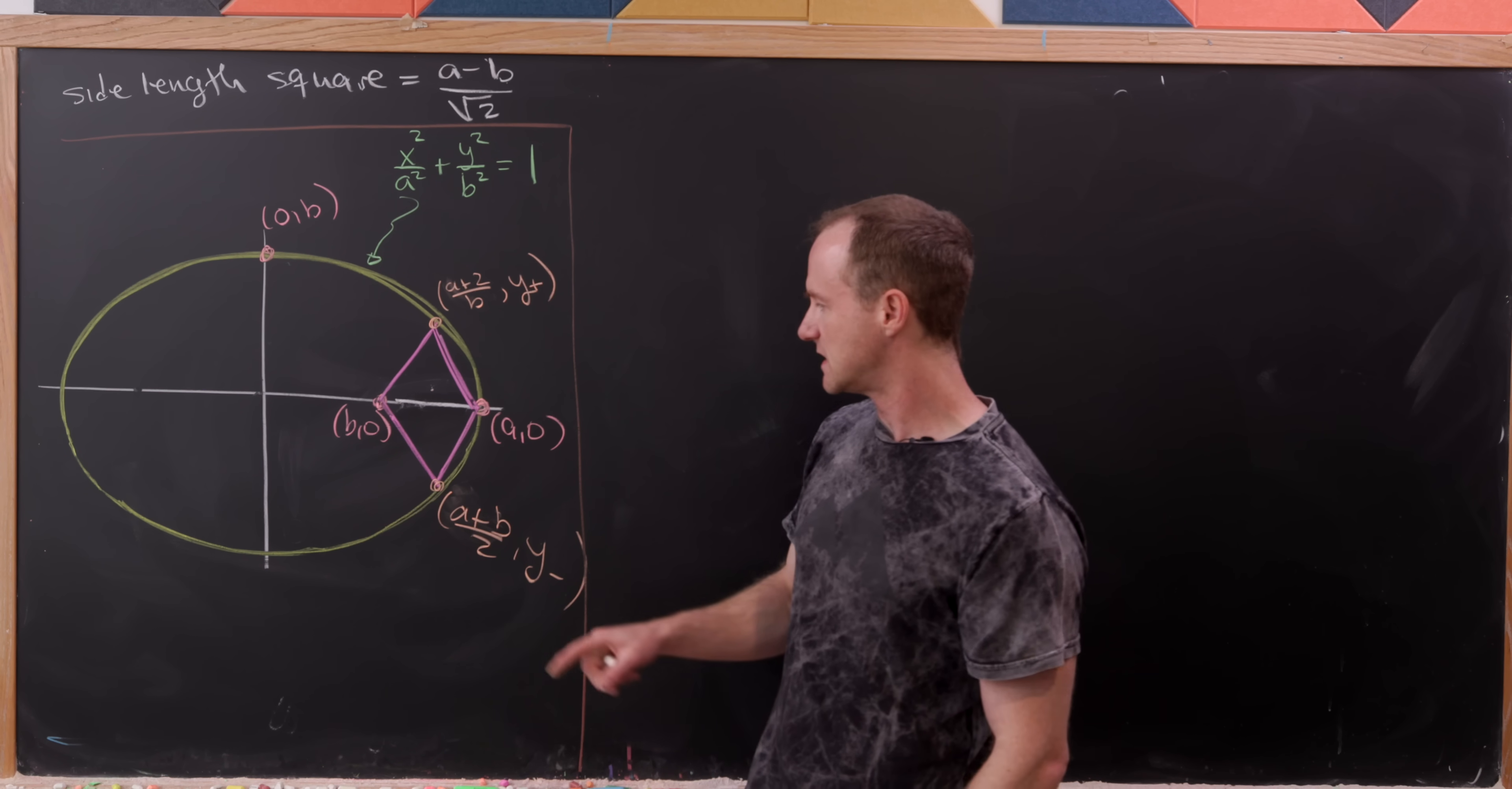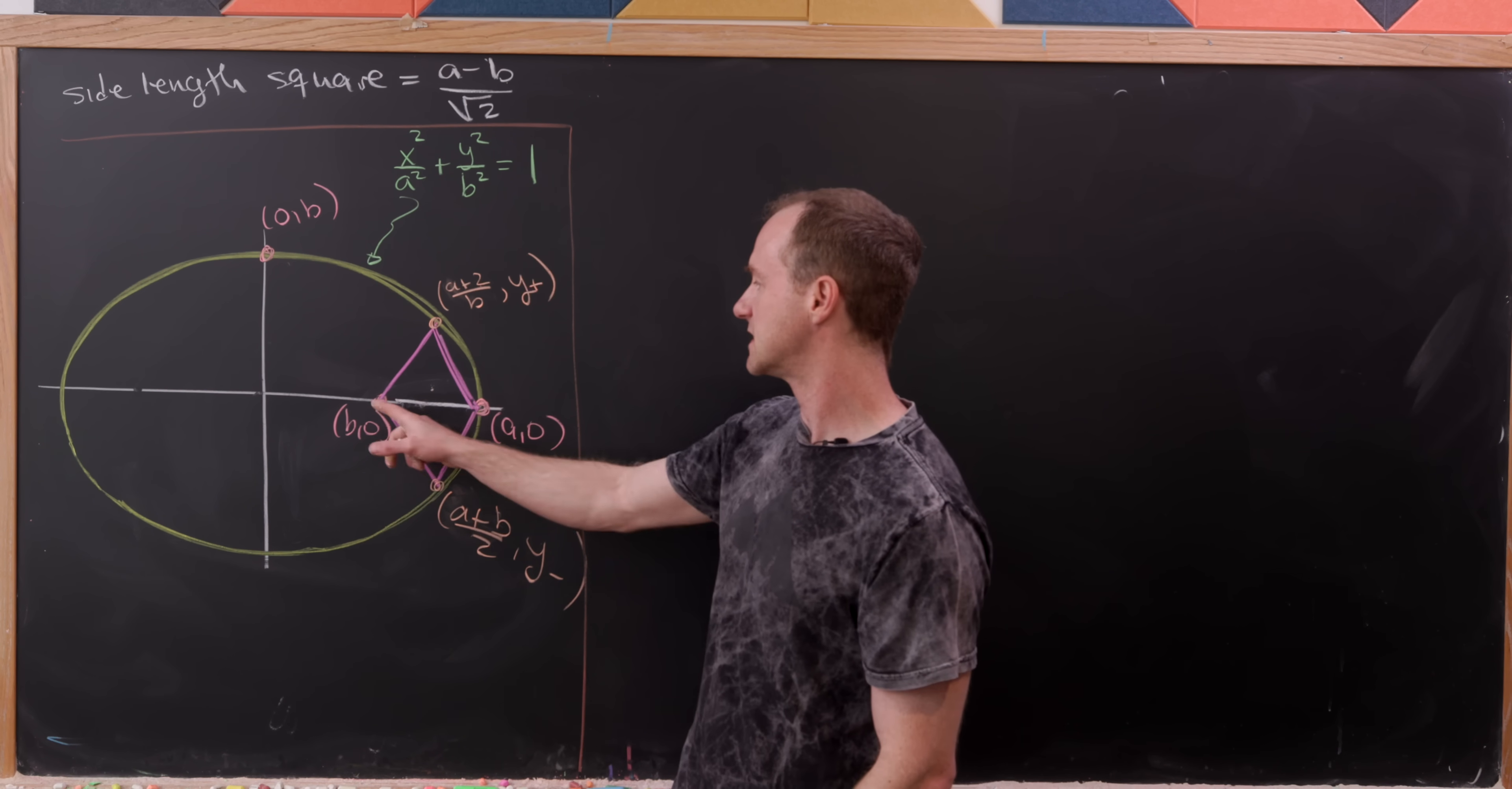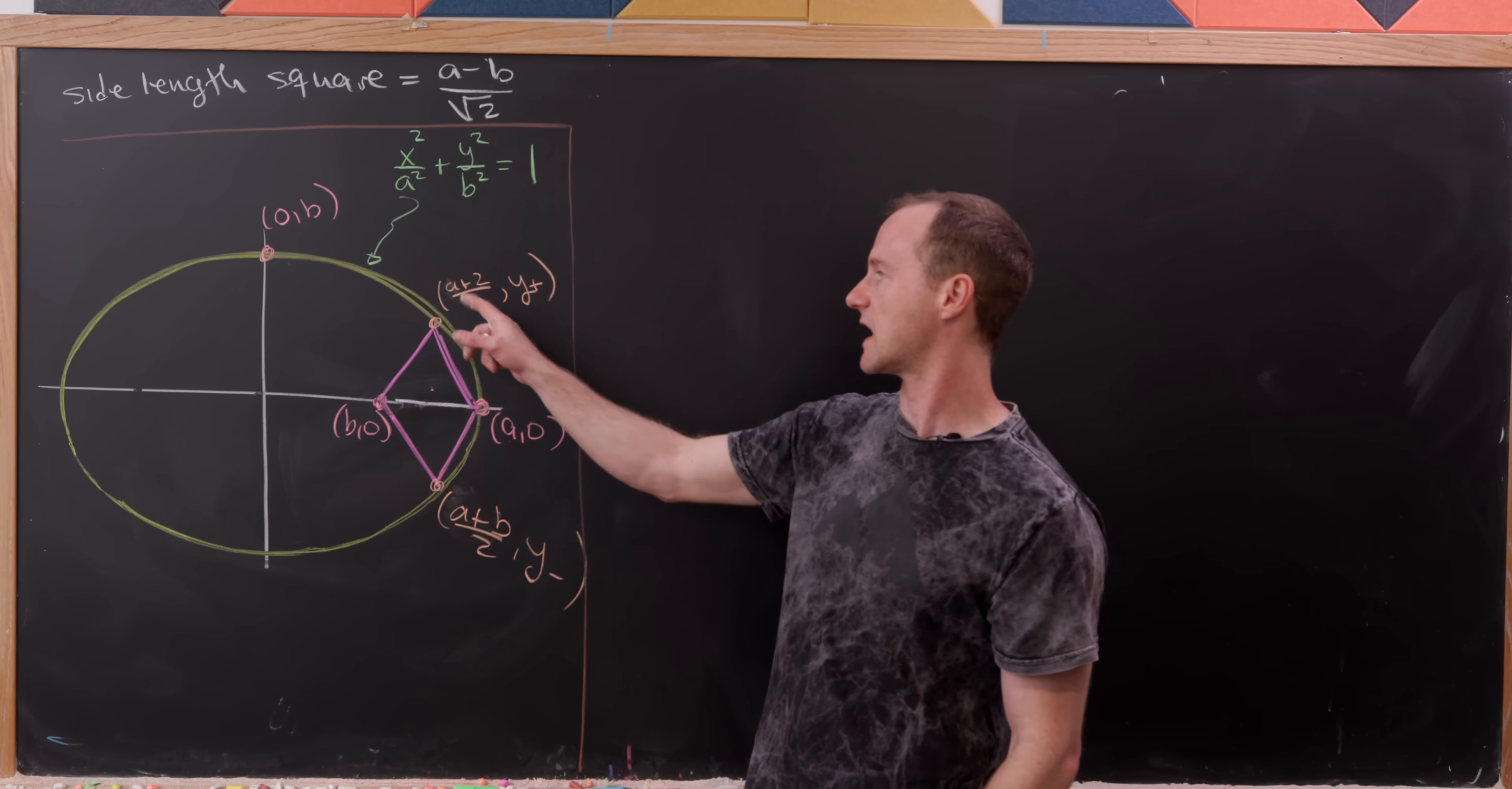But that means that we know the coordinates of these two other vertices. Well, at least we know the x coordinates immediately. And that's because the x coordinates are simply the average or the midpoints of this a and b thing.